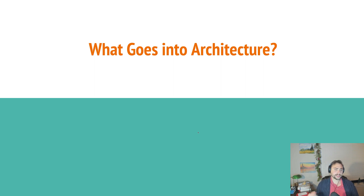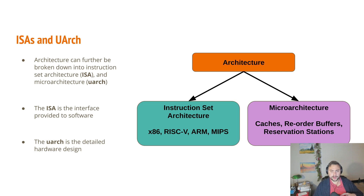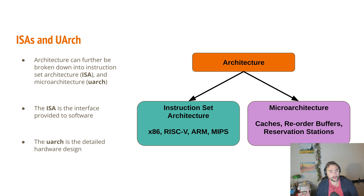What exactly goes into our architecture? We can break up our architecture into two parts. We can break it up into our instruction set architecture, often referred to as our ISA, and on the other side we can have our microarchitecture, sometimes referred to as our Uarch or Muarch — mu being the Greek letter often used to abbreviate micro.